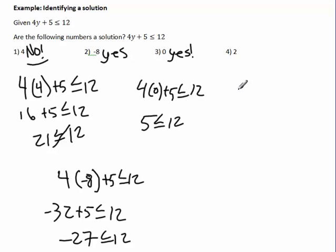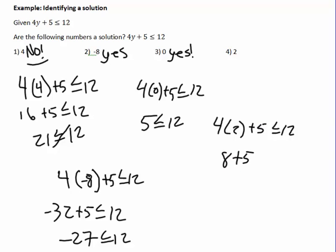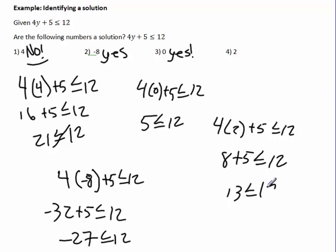Testing y = 2: 4 times 2 plus 5 is 8 plus 5, which is 13. Is 13 less than or equal to 12? No — that is not true, so 2 is not a solution.